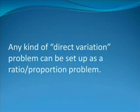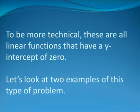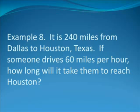Any kind of direct variation problem can be set up as a ratio-proportion problem. Direct variation problems involve a formula like distance equals rate times time, total cost equals unit price times quantity ordered, power is equal to current times voltage, voltage is equal to current times resistance, etc. To be more technical, these are all linear functions that have a y-intercept of zero. Let's look at two examples of this type of problem.